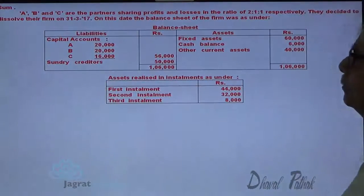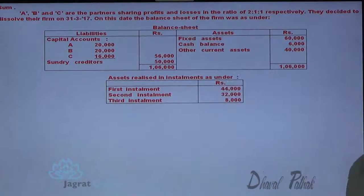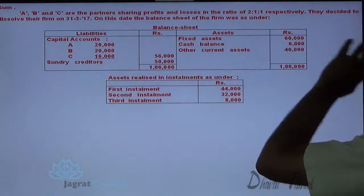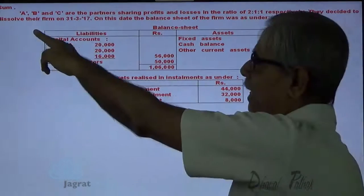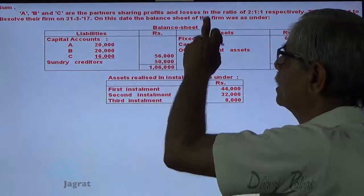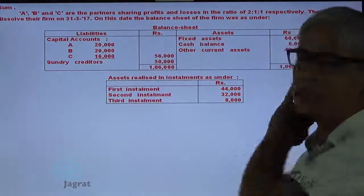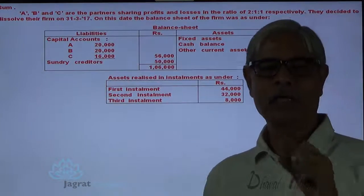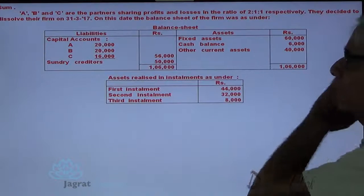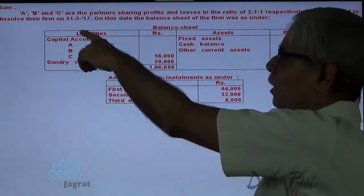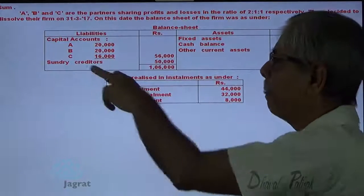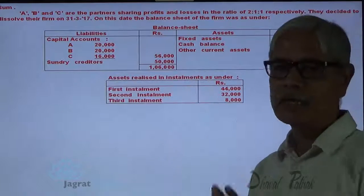A, B, C are partners sharing profits and losses in the ratio of 2:1:1 respectively. They decided to dissolve the firm on 31-3-2017. On this date, their balance sheet is as follows. On the asset side, you are given fixed assets, other current assets, and cash balance. Capital of A, B, C is 20,000, 20,000, and 16,000. Sundry creditors are 50,000.